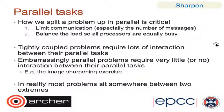Here's some terminology. If you have a problem where all the processors have to do a lot of communicating with each other — lots of interaction between parallel tasks — we call this a tightly coupled problem. At the other extreme, if you can break down a problem so the parallel tasks don't need to communicate at all and are completely independent, this is called an embarrassingly parallel problem. This is the ideal — zero communication between processors. In reality, most problems sit between these two extremes. You will explore this further in the Sharpen practical.